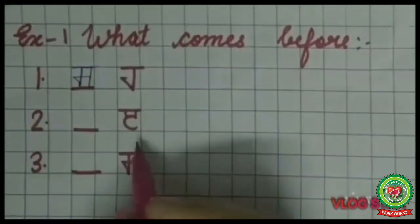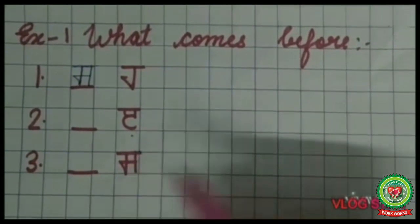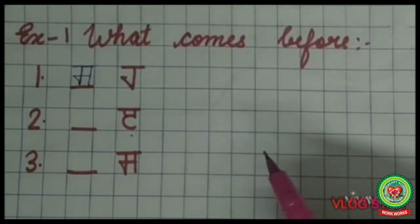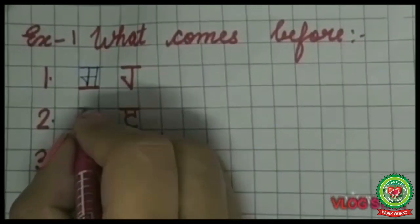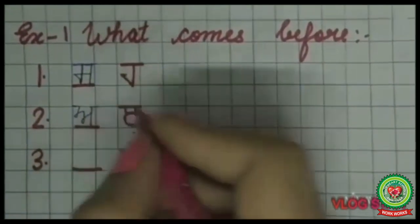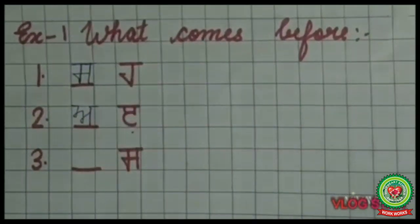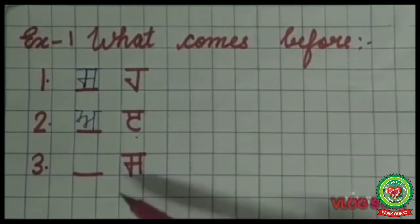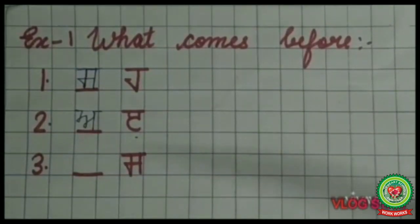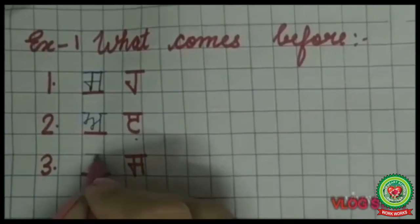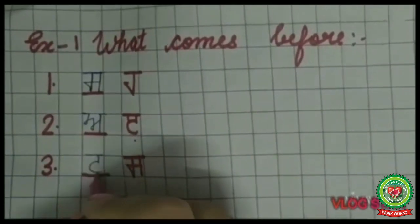The next one is Eri — what comes before Eri? The answer is Aira. I will write Aira here. The next one is Sassa — what comes before Sassa? The answer is Eri. I will write Eri here.